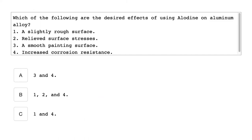Which of the following are the desired effects of using Alodyne on aluminum alloys? 1. A slightly rough surface. 2. Relieve surface stresses. 3. A smooth painting surface. 4. Increased corrosion resistance. The correct answers are 1 — a slightly rough surface — and 4 — increased corrosion resistance.